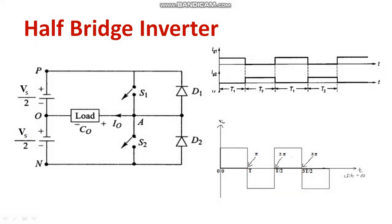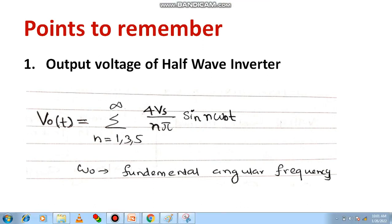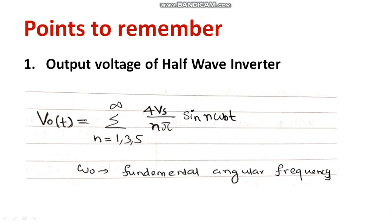This is a brief explanation of the half bridge inverter connected to R load, which is very important from a competitive examination point of view. The output equation to remember is: V0(t) = Σ (n = 1, 3, 5... to ∞) of (4Vs / nπ) × sin(nω₀t).